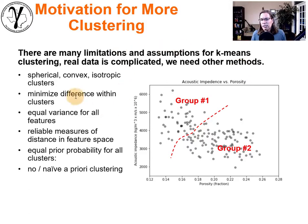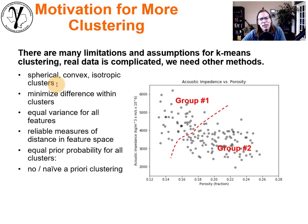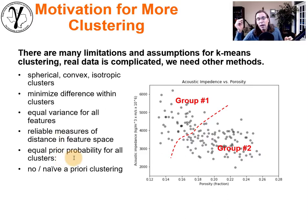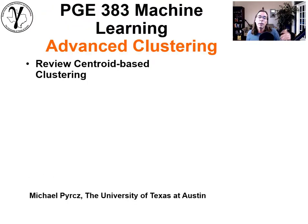Looking at the list of assumptions of K-means clustering: first and foremost, spherical convex isotropic clusters — blob shapes, I think, is a good way to think about that. There's also the assumption of equal prior probability for a data value or sample to belong to any one of the clusters, and that can be quite a big problem too.